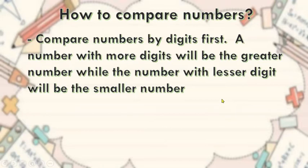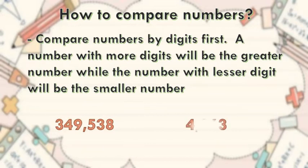For example, let's compare 349,538 and 4,063. Let's count how many digits 349,538 has: one, two, three, four, five, six.